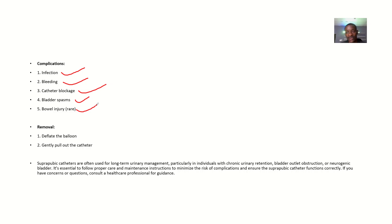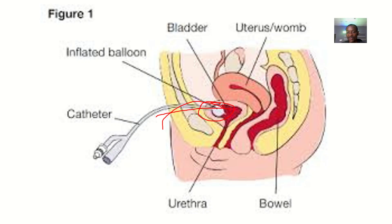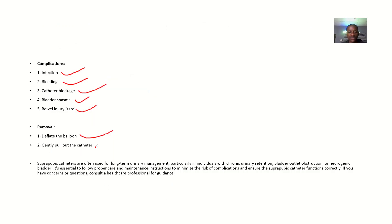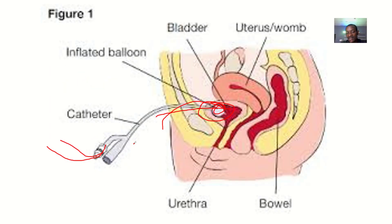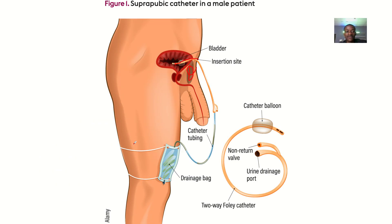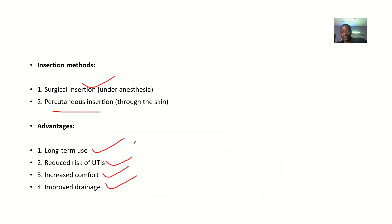For removal, you deflate the balloon, drain everything out, and then gently pull out the catheter. That covers the suprapubic catheter — its definition, uses, insertion methods, advantages, complications, and removal.